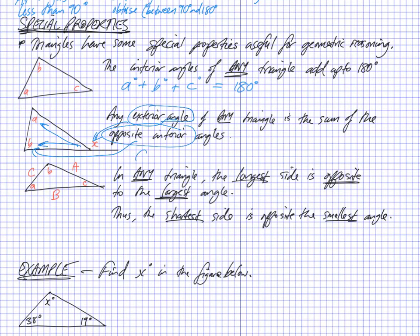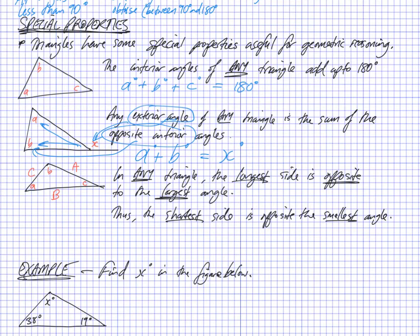A degrees plus B degrees is going to be equal to X degrees.